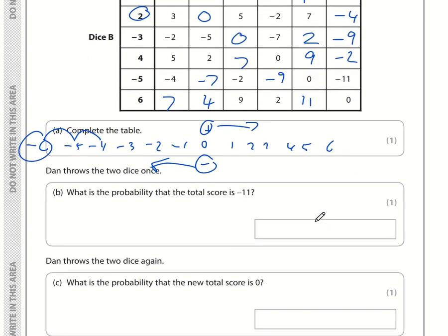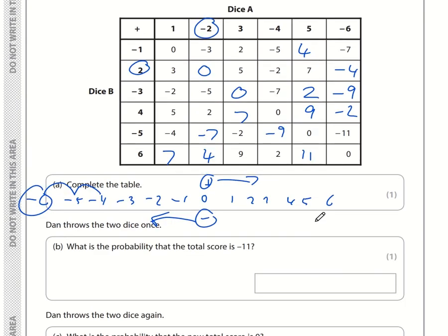Part B: What is the probability that the total score is minus 11? How many outcomes are there? There's 6 by 6, so that is out of 36. How many times can we get negative 11? There's only 1 minus 11, if you get a minus 6 and a minus 5. So the probability is 1 over 36.